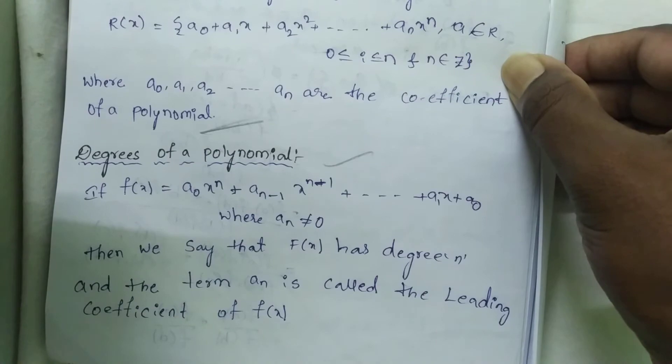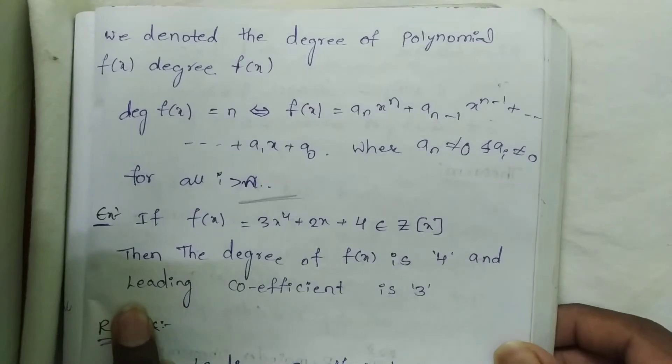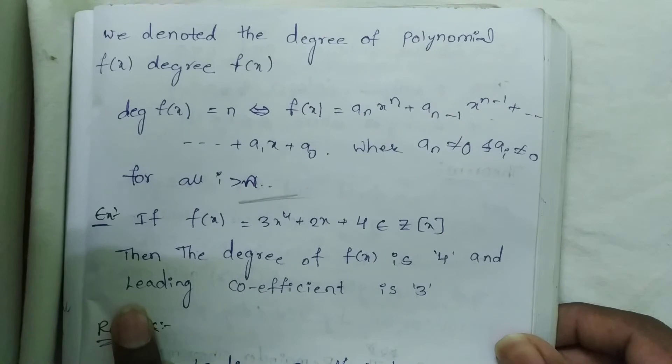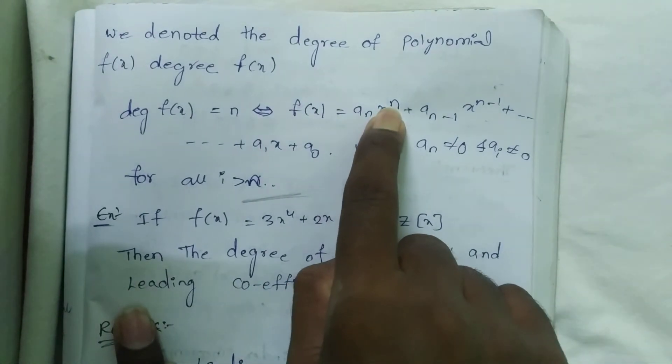These two definitions are important. We denote the degree of polynomial f(x) as deg(f(x)) = n, the highest degree of f(x) equals n here.